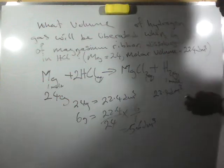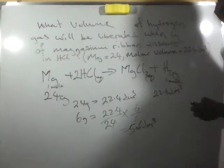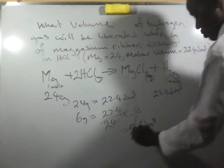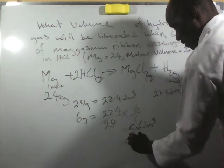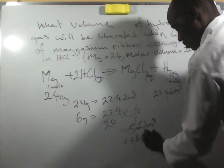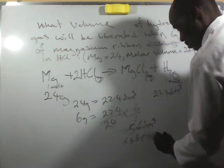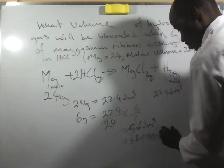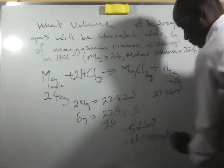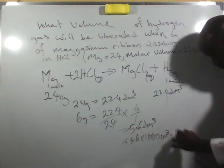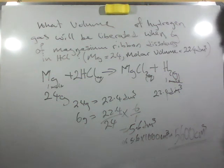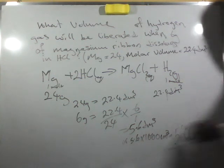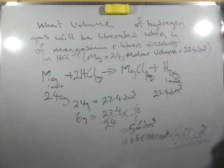5.6 dm³ of hydrogen. We can also convert it to cm³, which is 5.6 times... 5.6 dm³ of hydrogen. This can be our final answer.